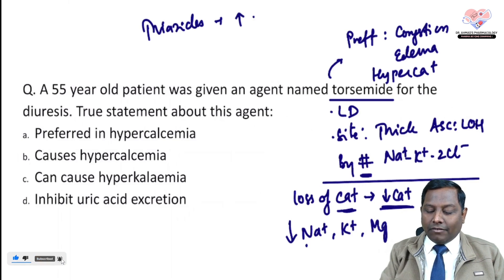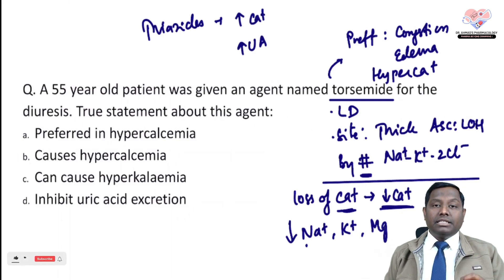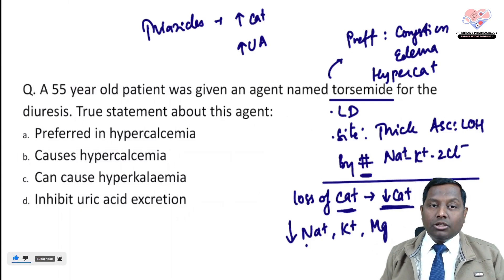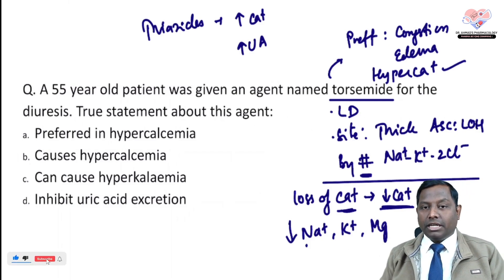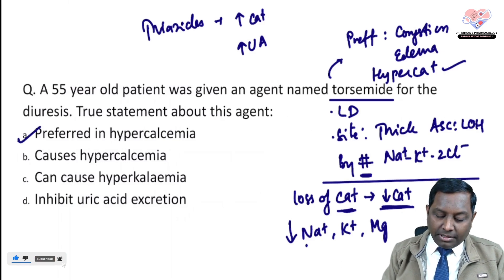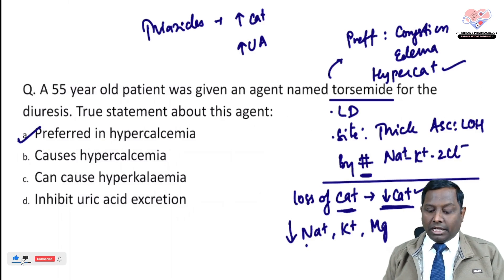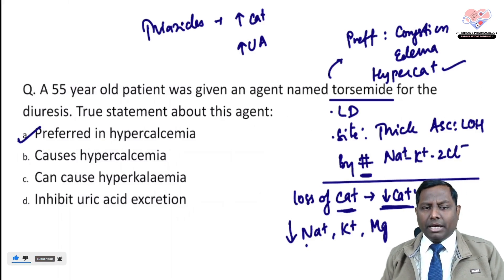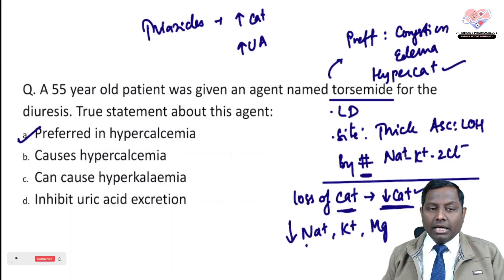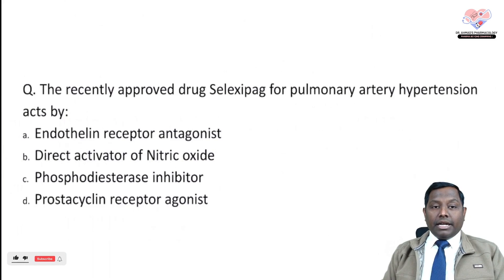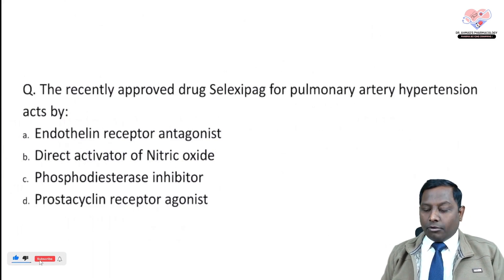In comparison, thiazide diuretics increase the level of calcium. They also increase the level of uric acid, which is why thiazide diuretics can precipitate gout. Reading the options: loop diuretics are preferred in hypercalcemia — yes, because they cause hypocalcemia, not hypercalcemia. They cause hypokalemia, and increasing uric acid is associated with thiazide diuretics. The correct answer is A.